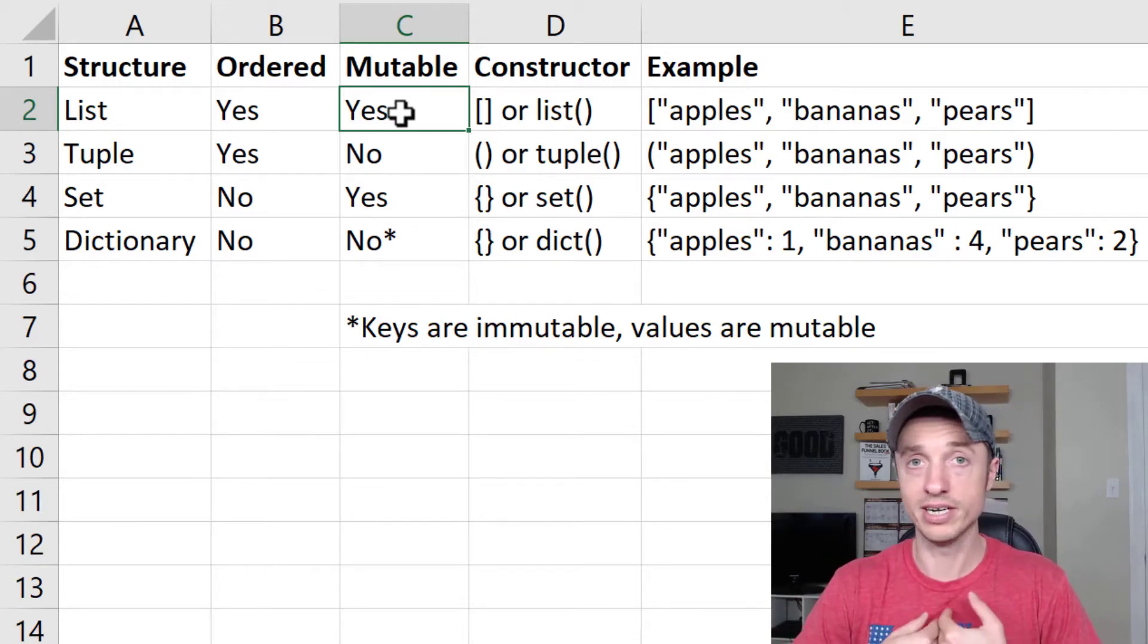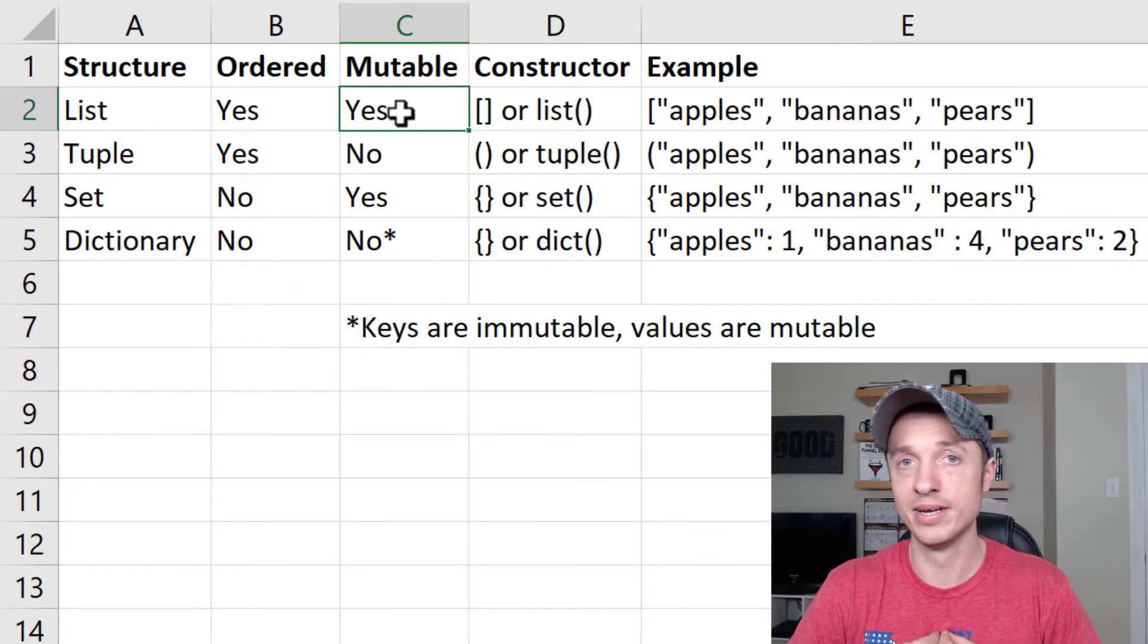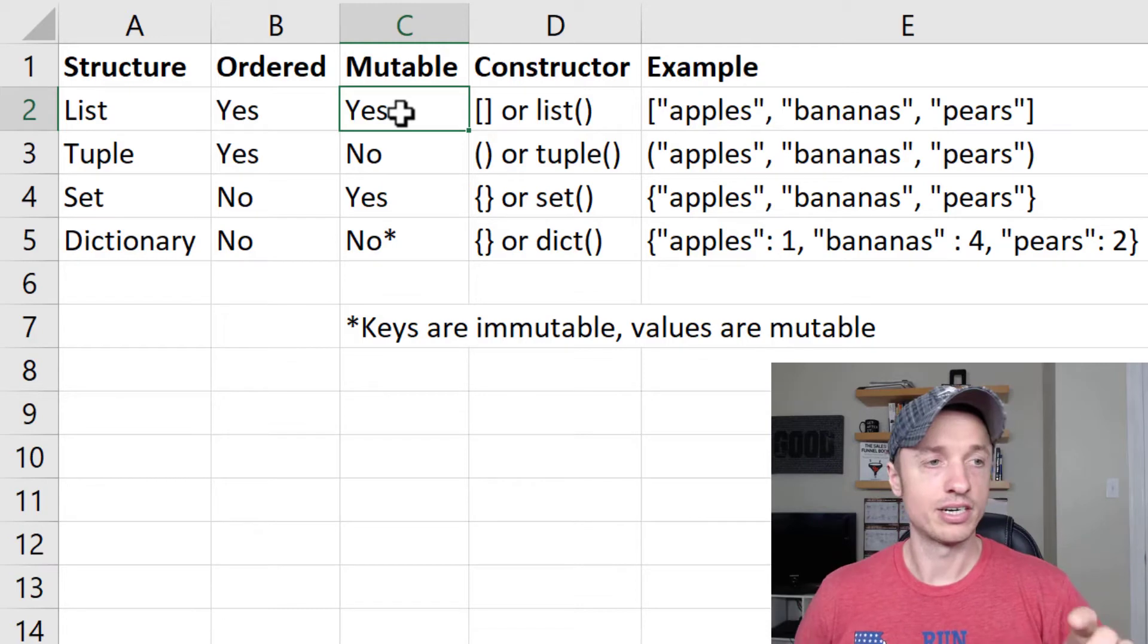Whereas your personal grid coordinates, like where you are at a given time, that is mutable. So that could change. Depending on where you are in the world, you're going to have different grid coordinates. Things that don't change are immutable. Things that change are mutable.